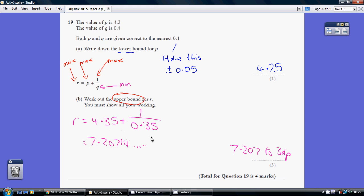It doesn't specify which degree of accuracy to show, so I've just chosen to go for three decimal places. So 7.207, any degree of accuracy will be fine, just make it clear which one you're choosing to use.